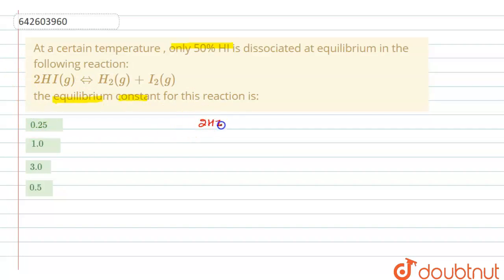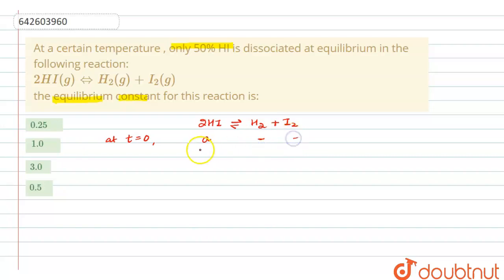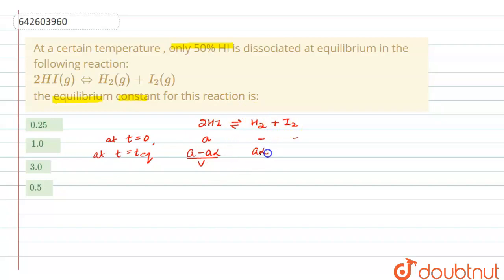Let's write the reaction: 2HI in equilibrium with H₂ plus I₂. At time t = 0, the amount of HI is 'a', and H₂ and I₂ are zero. At equilibrium, HI becomes (a − aα/v). Since 2 moles of HI react to give 1 mole of H₂ and 1 mole of I₂, H₂ will be aα/2v and I₂ will be aα/2v.